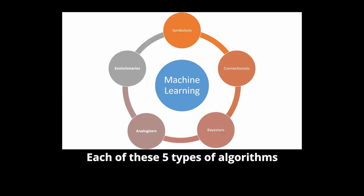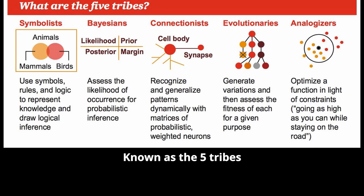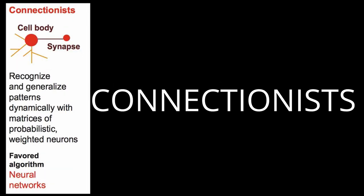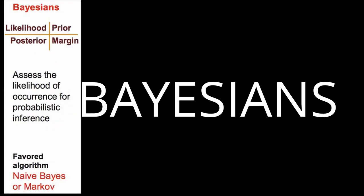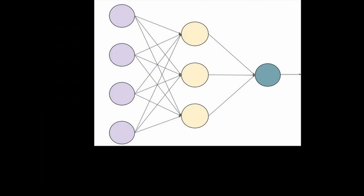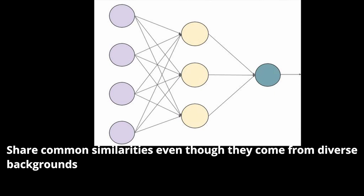Each of these five types of algorithms, known as the five tribes - revolutionaries, connectors, symbolists, Bayesians, and analogizers - share common similarities even though they come from diverse backgrounds.